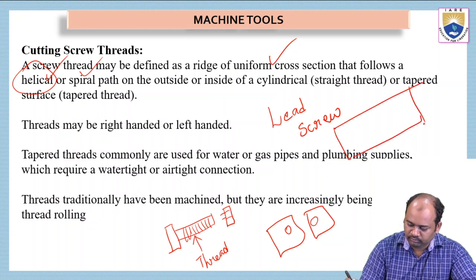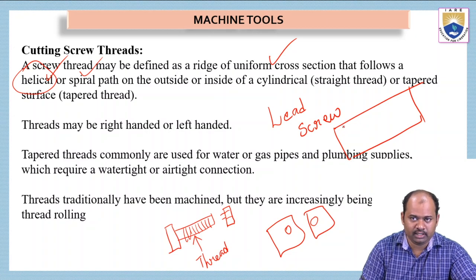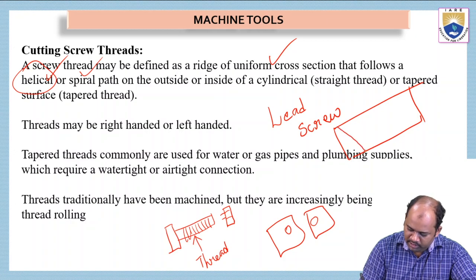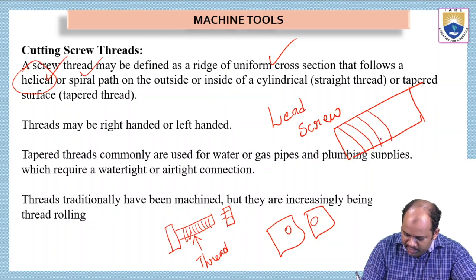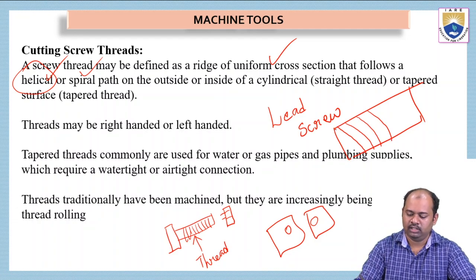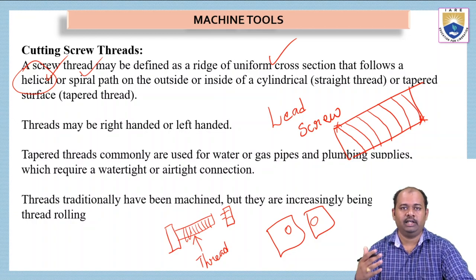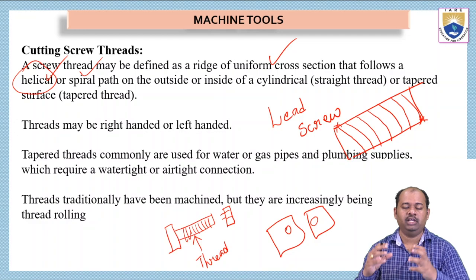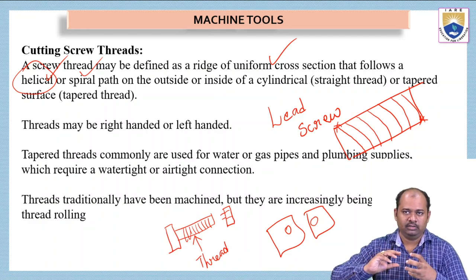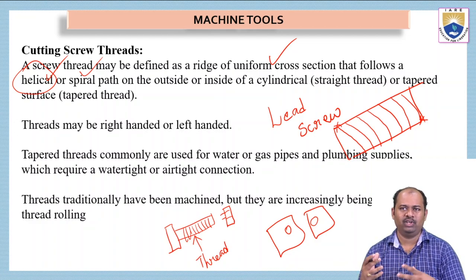Suppose this is the cylinder on which we have to make thread cuts. I have to go in this direction — it should be done in helical motion. Starting from here, if I go on rotating, I will end up at this point. I have to make this helical type of thread cut for making it possible for rotation of the screw. Otherwise, we cannot make the bolt rotate on this object.